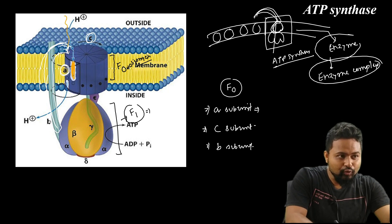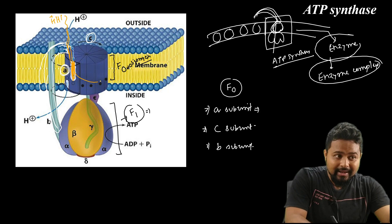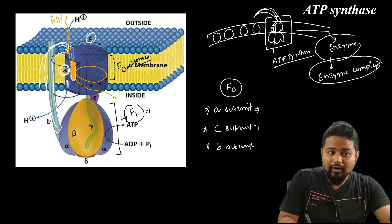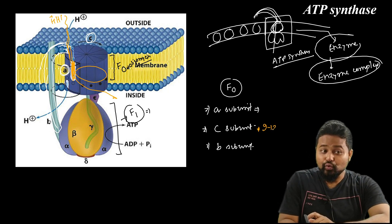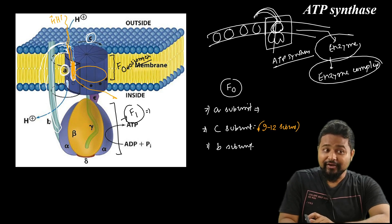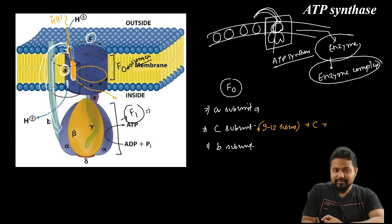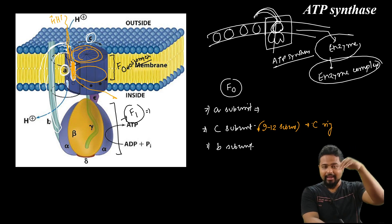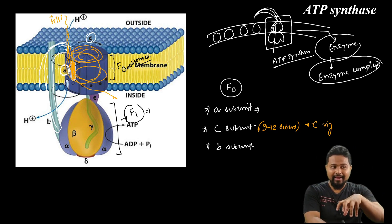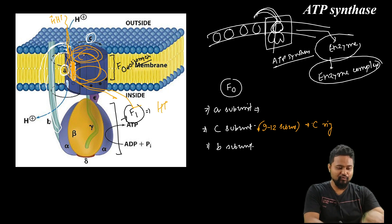The A subunit provides the pathway for protons. When protons enter, they pass through the A subunit channel to the C subunit. The C subunit — there are 9 to 12 C subunits — and together they form the C ring.